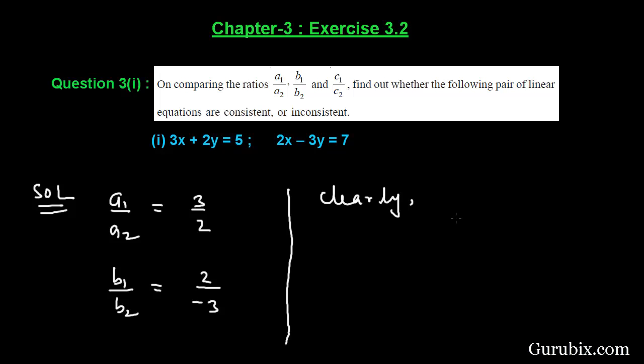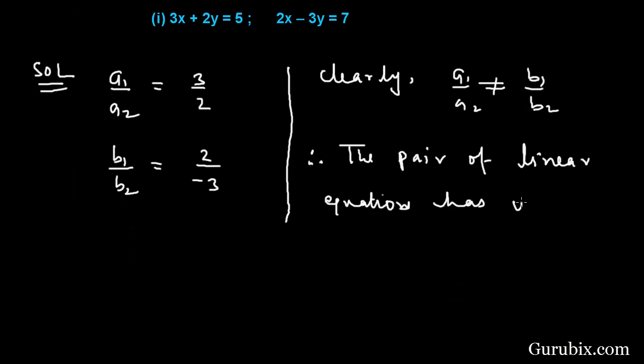Clearly, A1 over A2 is not equal to B1 over B2, because any positive number cannot be equal to any negative number. This means the pair of linear equations has a unique solution.